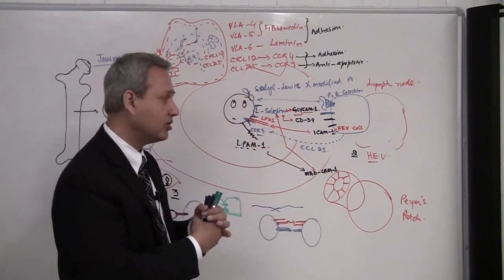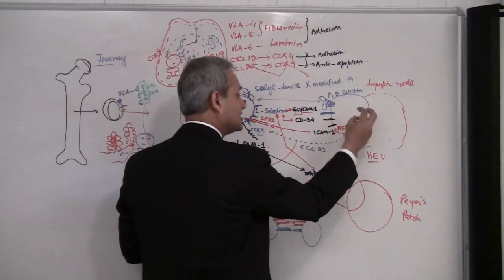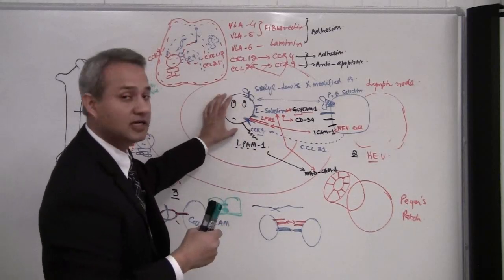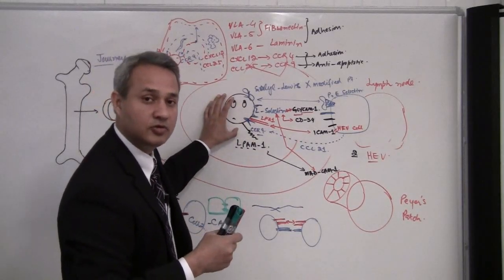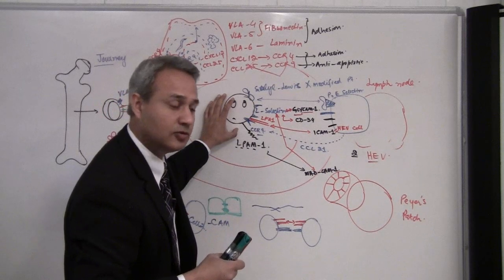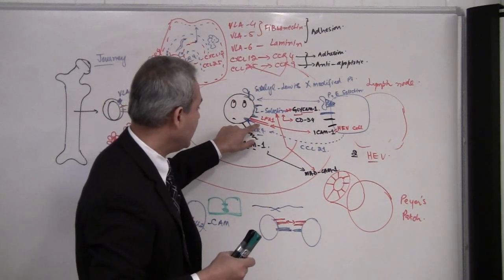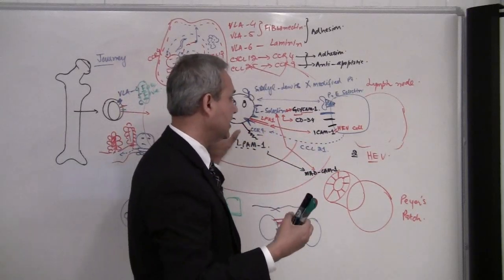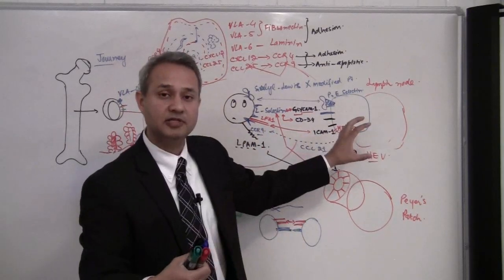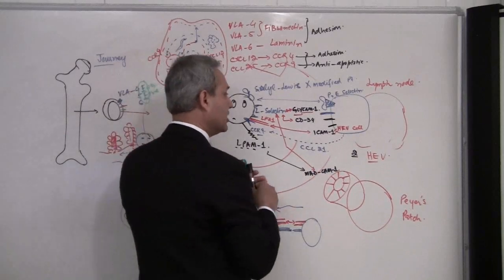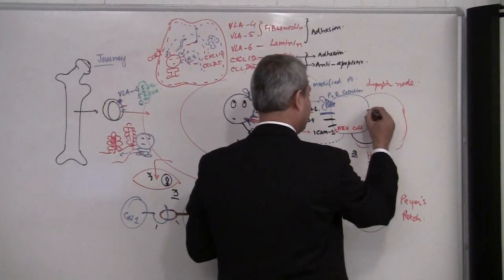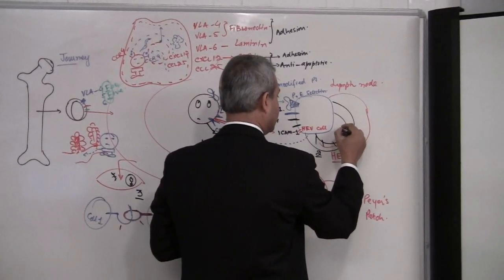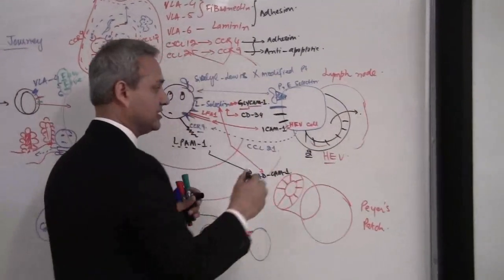Once that is done, the cell is slowed down. Now, the high endothelial venular cell is secreting CCL21 which causes this T cell to express LFA-1 integrin which causes the ICAM-1 adhesion, and that is when the T cell gets trapped in this venule. From there, it would then migrate inside the lymph node.